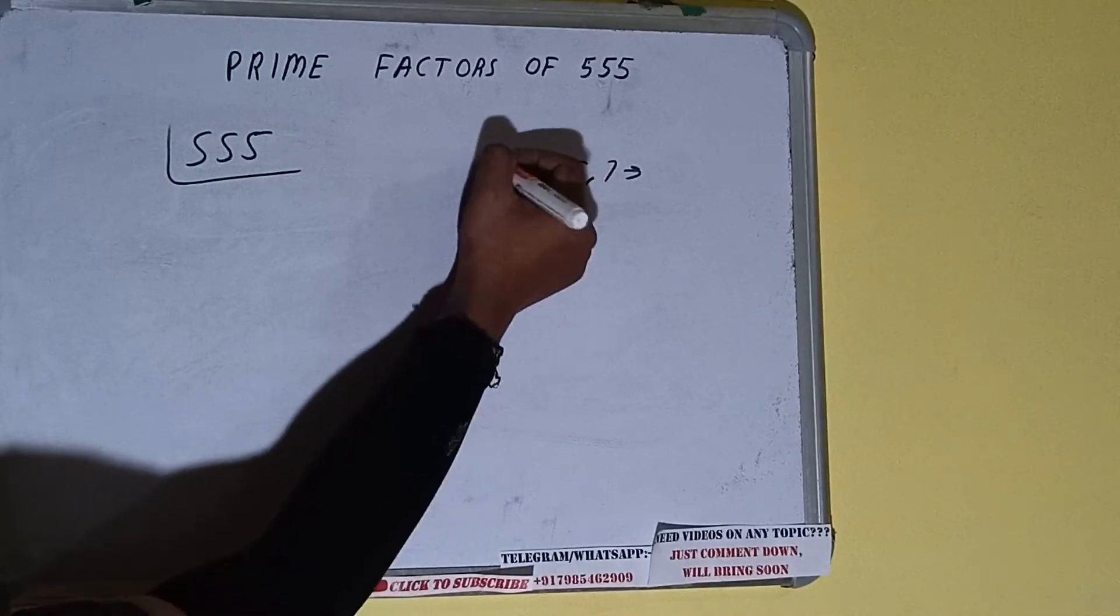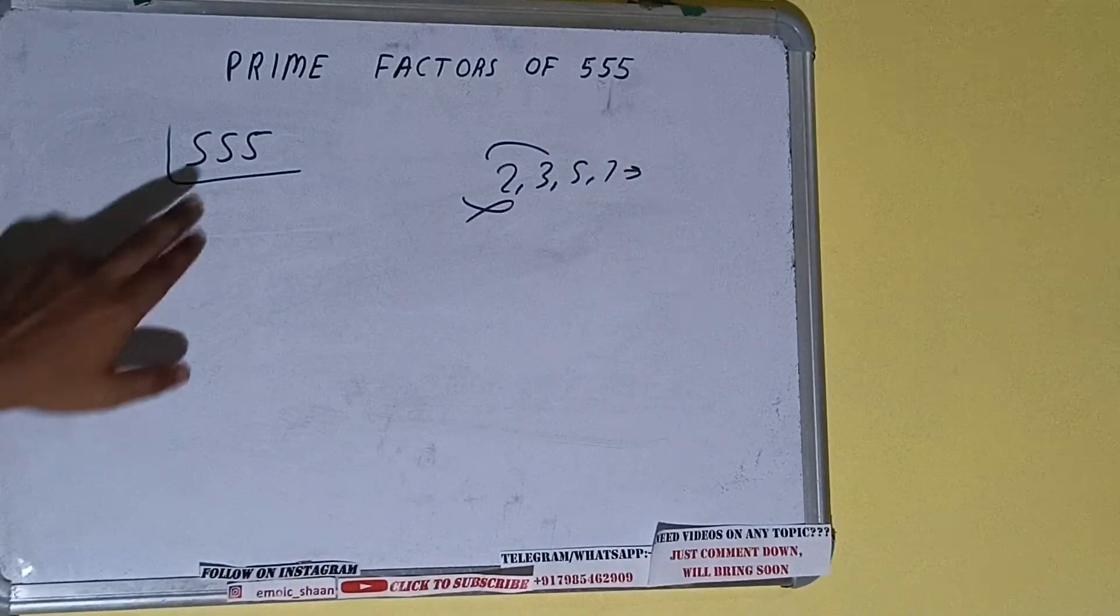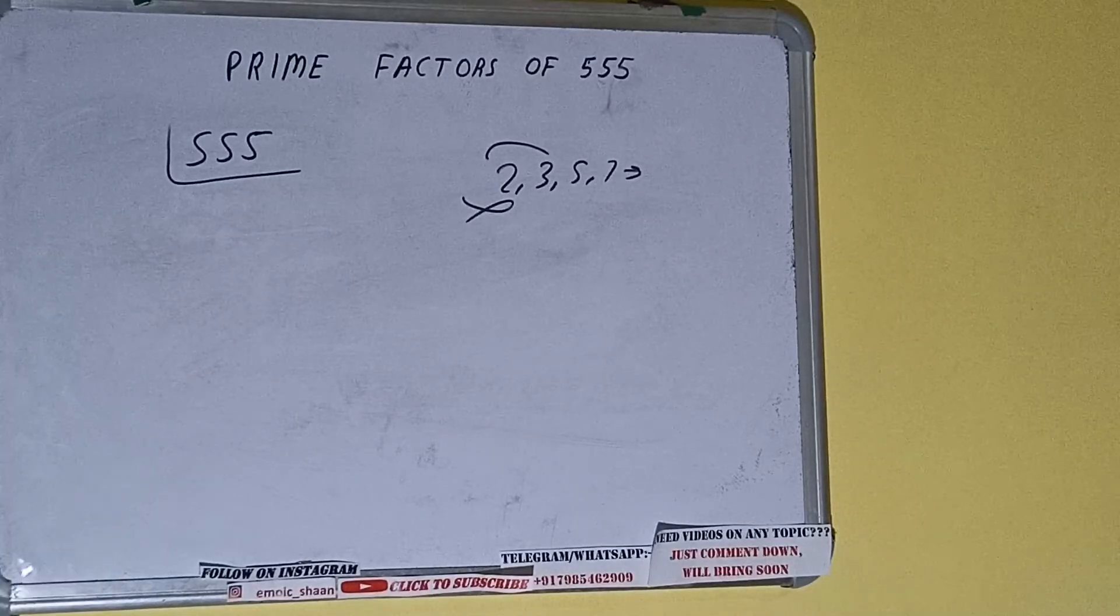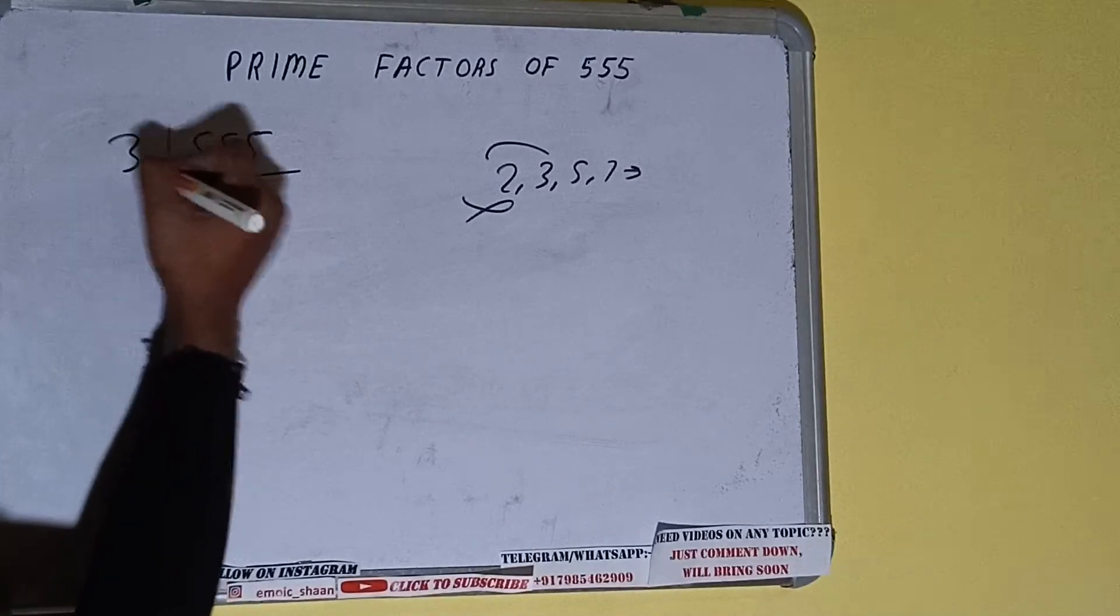So we'll check with the next lowest prime number, that is 3. Five plus five plus five equals fifteen, which is divisible by 3. So divide it.